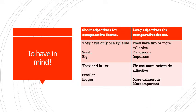Something you need to have in mind when talking about comparative sentences is that we have short and long adjectives. Short adjectives are the ones that only have one syllable — for example, 'small' or 'big' — and then they end with '-er.' For example, if I have the word 'small,' in the comparative form it will be 'smaller,' and if I have the word 'big,' it will be 'bigger.'